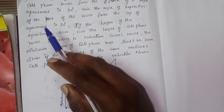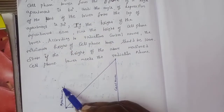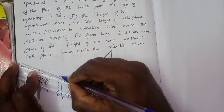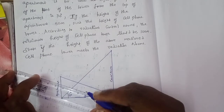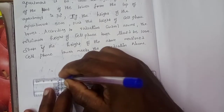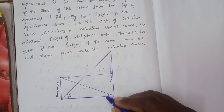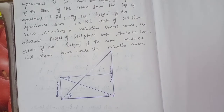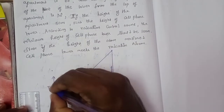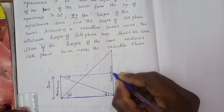And the angle of depression from the top of the apartment to the foot of the tower is 30 degrees. The height of the apartment is 50 meters.